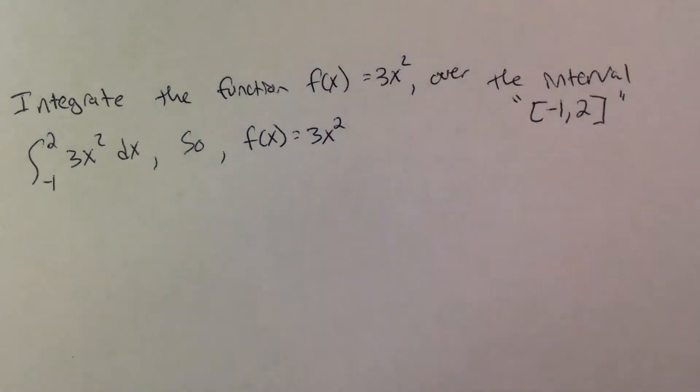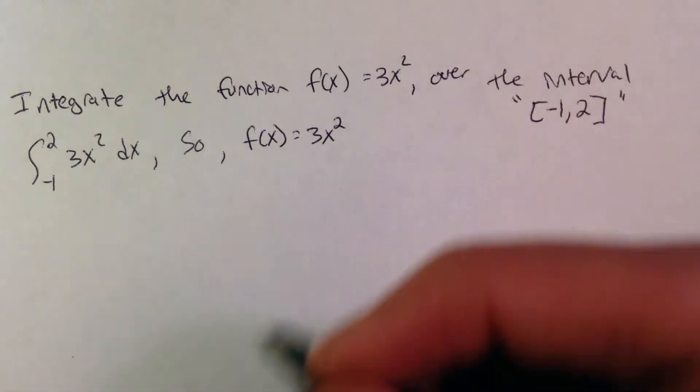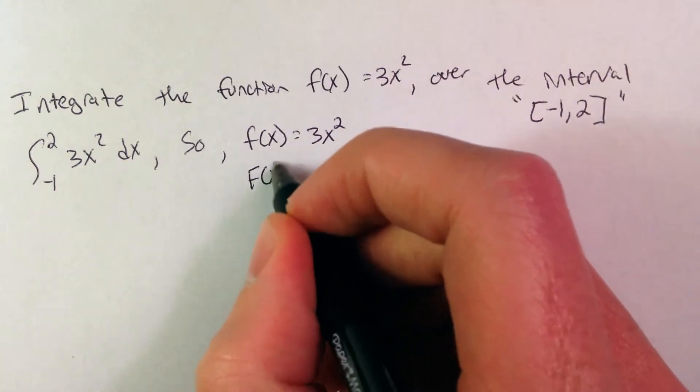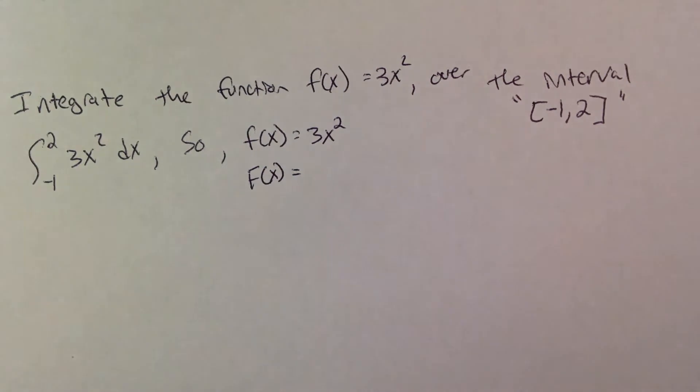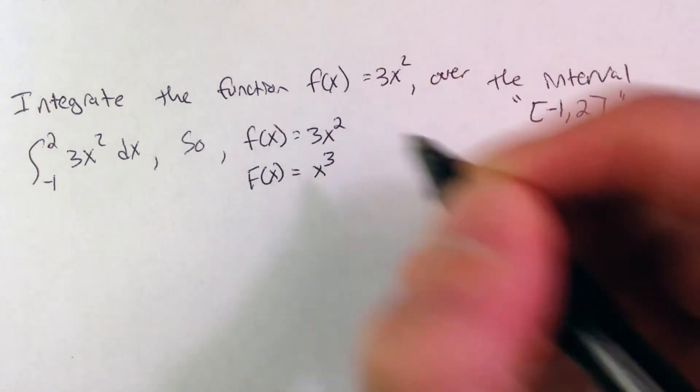If I want to find the antiderivative, what function has a derivative that is equal to 3x squared? I would write, well, 3x squared comes from x to the cubed power.